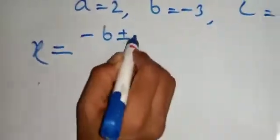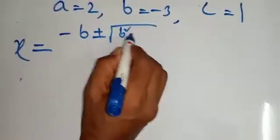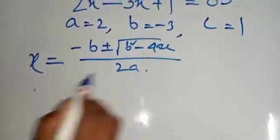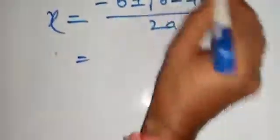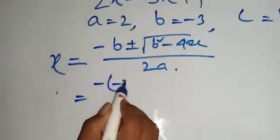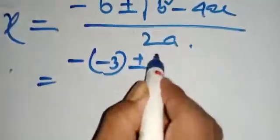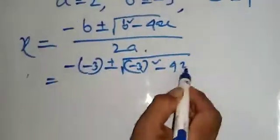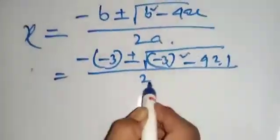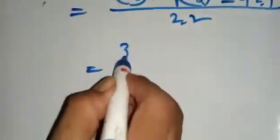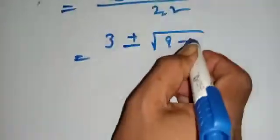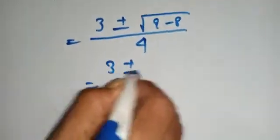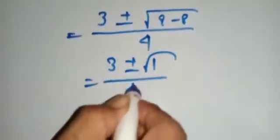Minus b plus minus root over b square minus 4ac by 2a. Now, put the value of abc. Minus b minus 3 plus minus root over b square minus 4 into 2 into 1 by 2 into 2. That means, 3 plus minus root over 9 minus 8 by 4. That means, 3 plus minus root over 1 by 4.